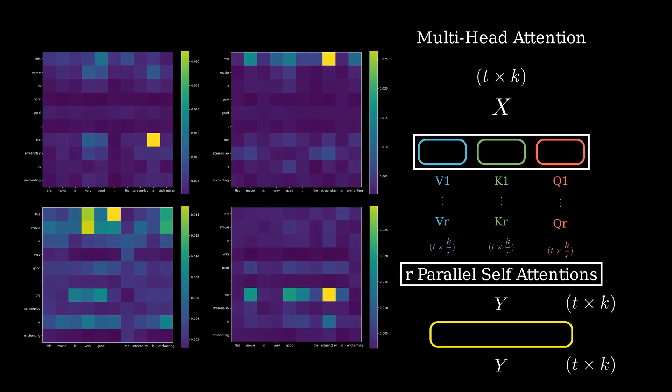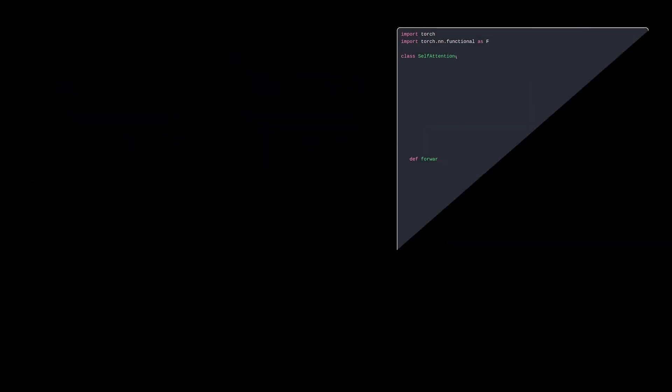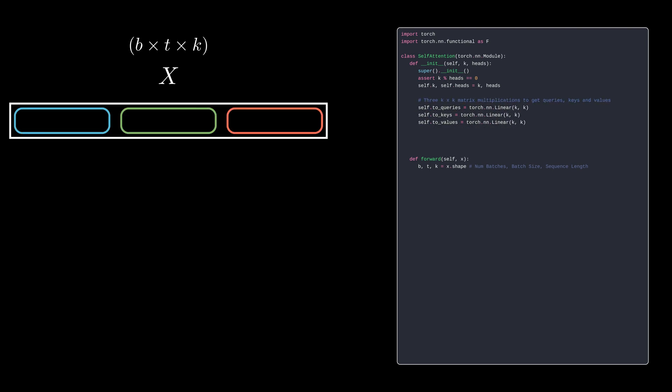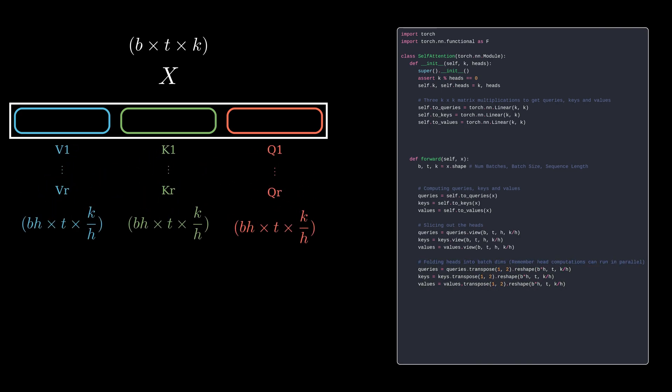As Feynman once said, what I cannot create, I do not understand. So let's code self-attention. The input is a 3D tensor with B representing the batch size or the number of reviews in this case, T are the number of words in the review and K is the vector representation of each word. Another thing we have to ensure is that the number of heads divide the embedding length evenly. Now we can define the three neural nets and pass the input tensor through them to get query, key and value. Next, we perform the slicing operation to split these large tensors into multiple heads. Remember that self-attention on different heads can be performed in parallel, and to facilitate this, I'll just roll the dimension representing different heads into the batch one.